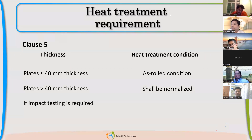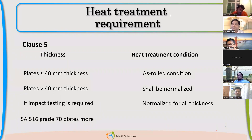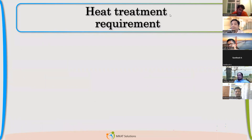If the plate thickness is more than 40mm, then you cannot order it as as-rolled. Even if you don't write anything, the mill will produce it in normalized condition, because it is a code requirement. You cannot avoid it. So even if you don't specify, it will be ordered as normalized.